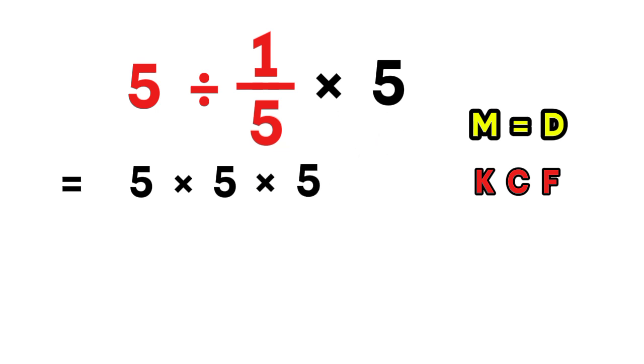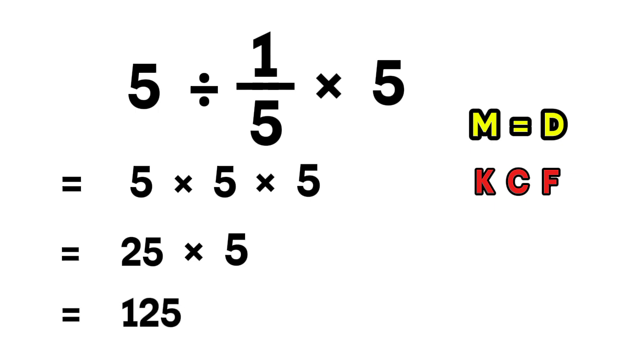After that, we still have one more multiplication waiting for us at the end. So we continue. 5 times 5 equals 25. Then we take that 25 and multiply again. 25 times 5 equals 125. And that, finally, gives us the real answer. Not 5. Not 1. But 125.